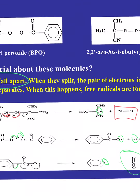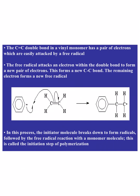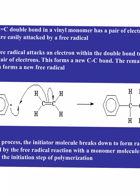So these are the initiators — they break apart and bust things open. That carbon-carbon double bond in vinyl monomers: the free radicals and the double bonds are prime targets for each other. It's looking to find something to react with, it sees the double bond, and bang — starts the process. This free radical attacks an electron within the double bond to form a new pair of electrons, forming a new carbon-carbon bond, and the remaining electron gives you the next free radical. The phenyl group with a free radical interacts with that double bond, breaks it open, and forms a normal carbon-carbon bond.